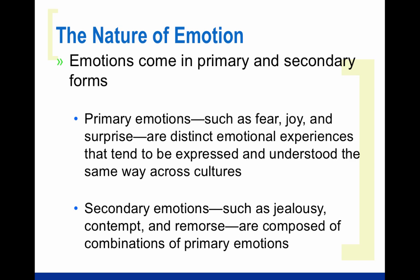Emotions come in both primary and secondary forms. The primary emotions are distinct emotional experiences that tend to be expressed and understood the same way across the world. The primary emotions have been determined to be joy, sadness, anger, fear, surprise, and disgust. When people see images of others expressing those emotions across the world, people can pick out and identify the emotion being illustrated — so these are called primary emotions.